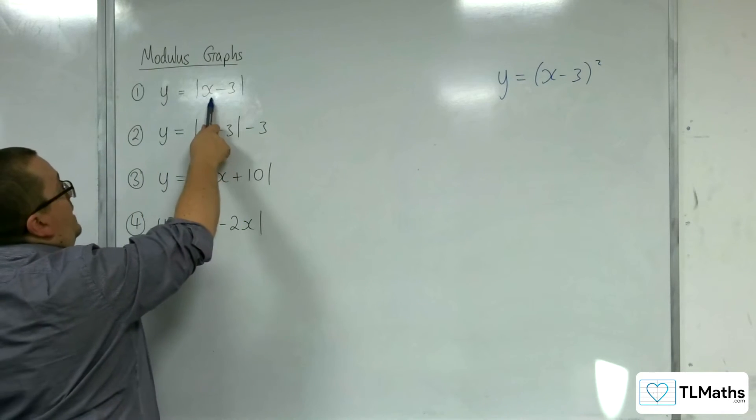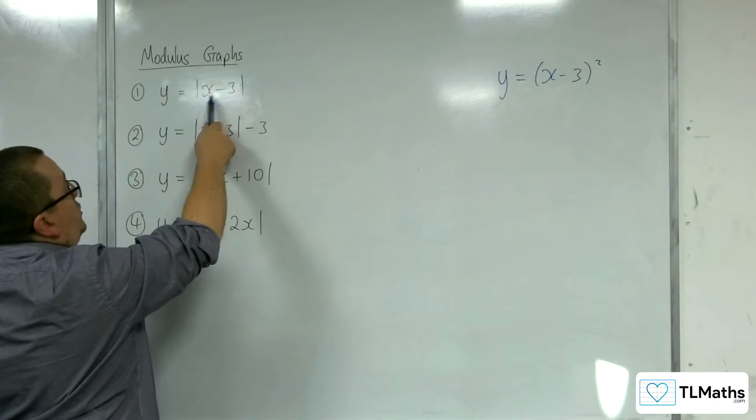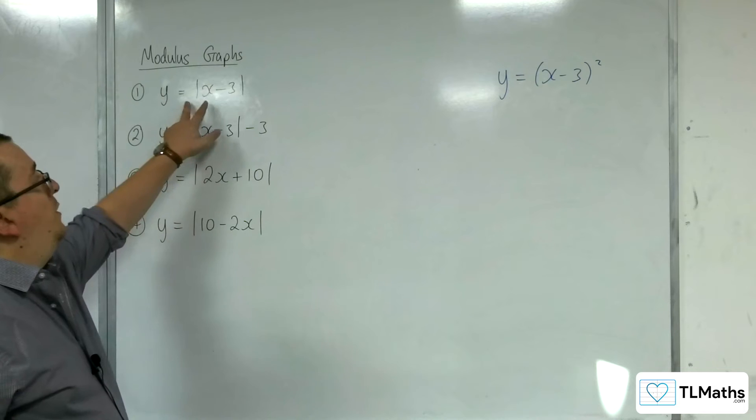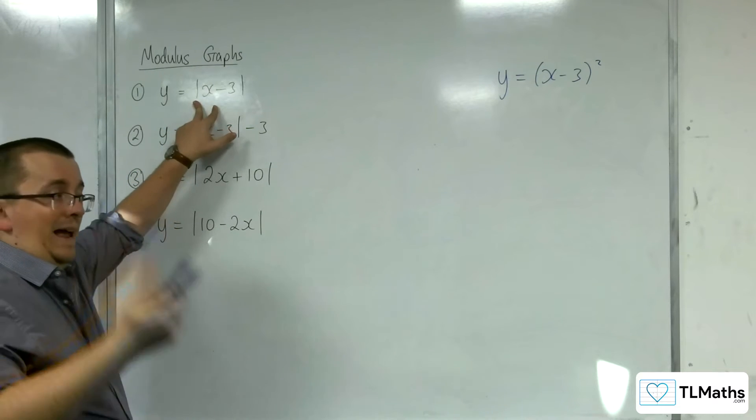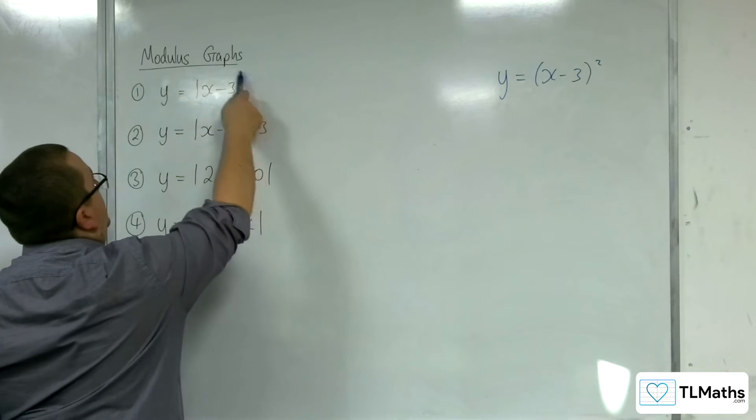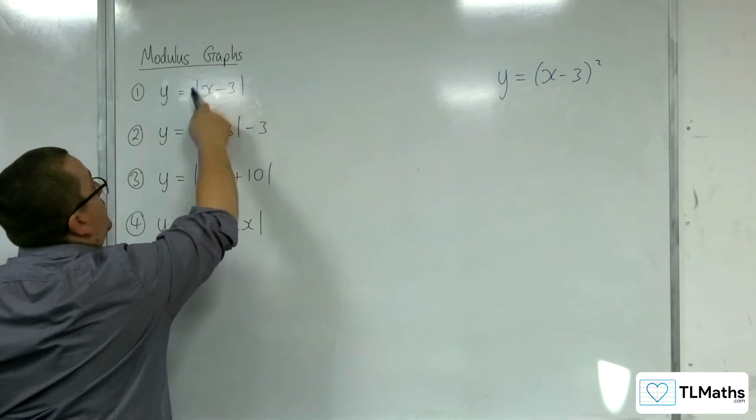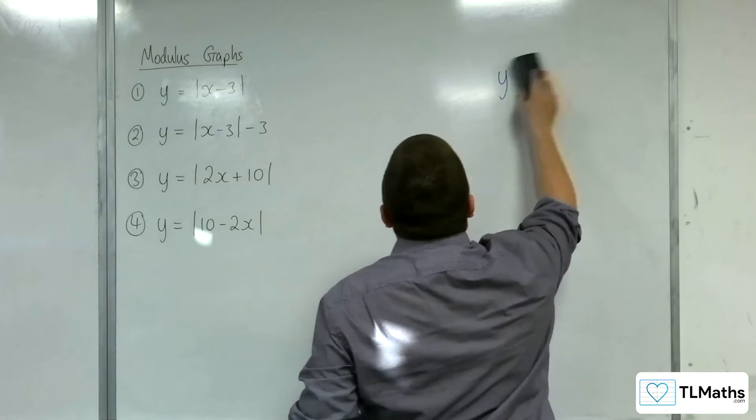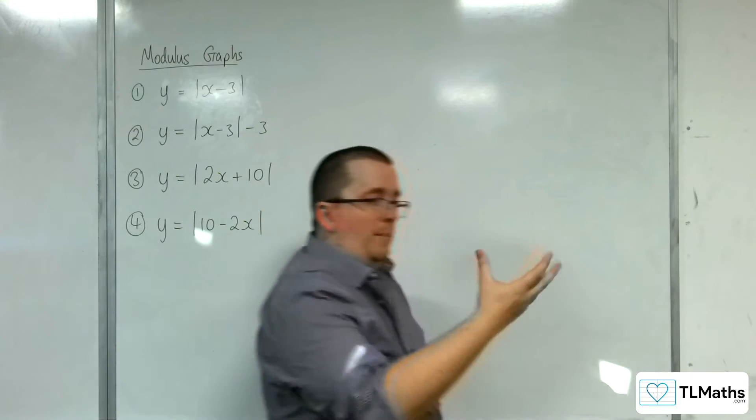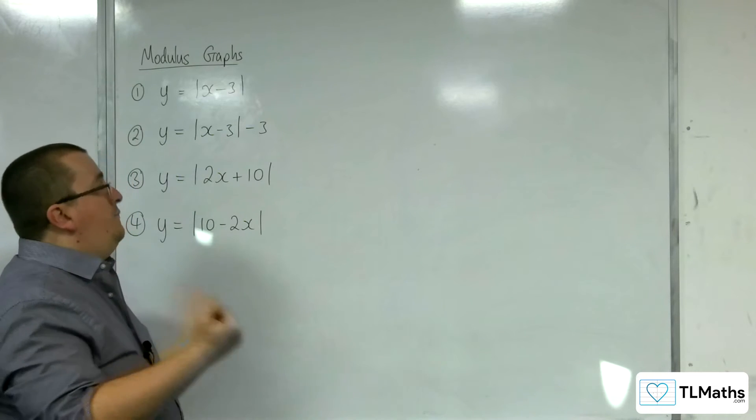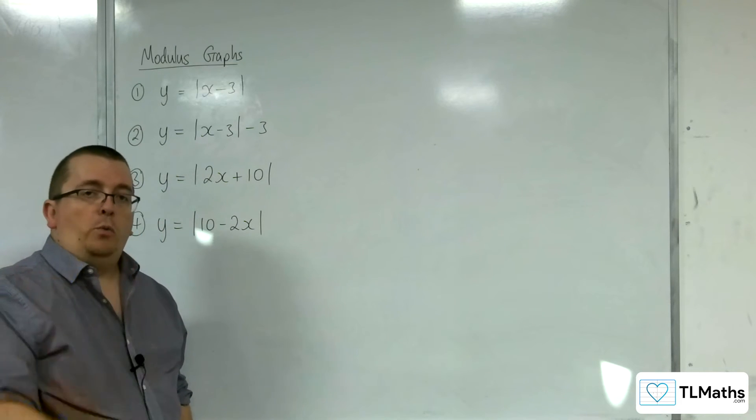Likewise, when x is 3 in here, you get 3 take away 3, which is 0, mod of 0 is 0. And so (3, 0) is also a point on this graph. And 0 is the smallest that this can be. Otherwise, it's larger than 0, it's positive.